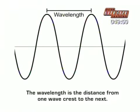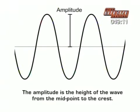The wavelength of a wave is the distance from one crest to the next. The symbol for wavelength is the Greek letter lambda. The amplitude of a wave is the height from the midpoint to the crest.